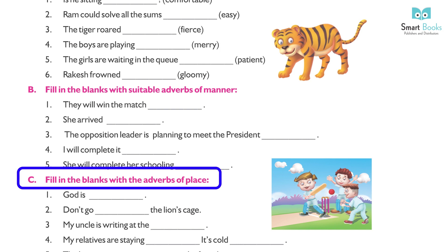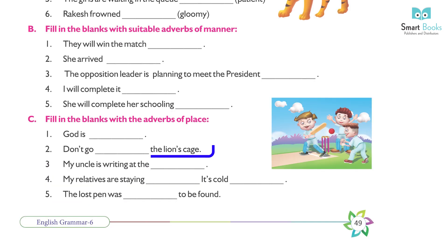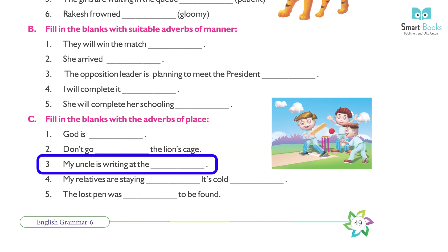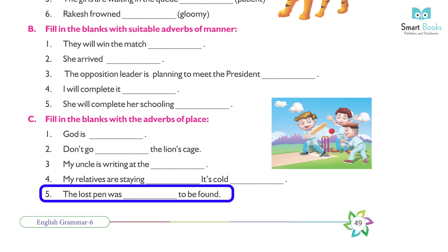Fill in the blanks with an adverb of place. 11. God is everywhere. 12. Don't go near the lion's cage. 13. My uncle is writing at the study. 14. My relatives are staying there. It sits cold here. 15. The lost pen was there to be found.